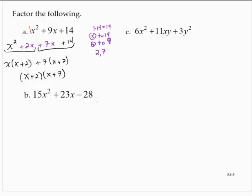Exercise B: 15x squared plus 23x minus 28. There's no common factor. I see that we have this trinomial in descending order, so I will again use the AC method.